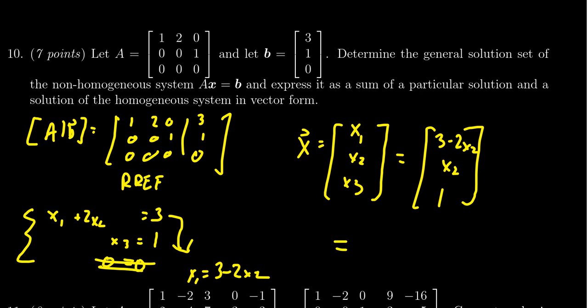We can then decompose this very quickly. We see that a particular solution will be 3 0 and 1. So if x1 equals 3, x2 equals 0, and x3 equals 1, you can double check with these equations here. 3 plus 0 is equal to 3, and 1 equals 1—very trivial solution. This is going to be our particular solution.